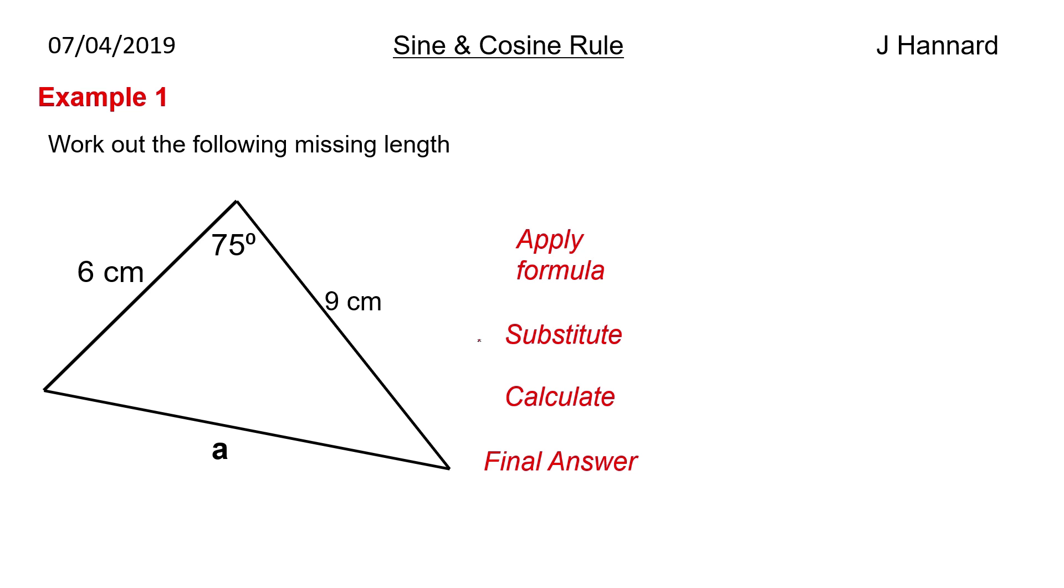Work out the following missing length. So we've got two sides, an angle and we want to work out a. We are given an angle in between two sides, so that means we can use the cosine rule. So we're going to stick the cosine rule there, we're going to substitute in. So we've got a squared equals 6 squared plus 9 squared minus 2 times 6 times 9 times cos 75, the angle opposite where you started out.